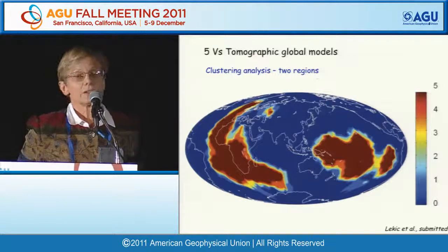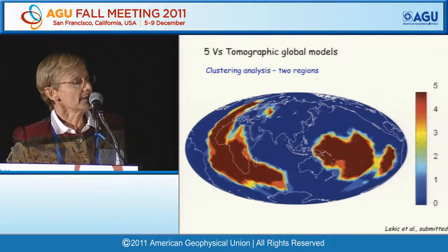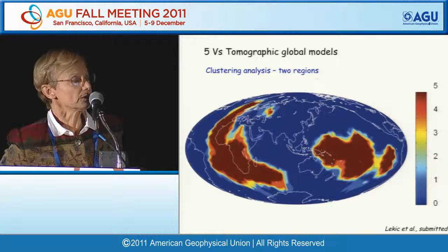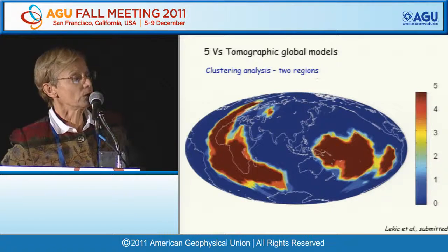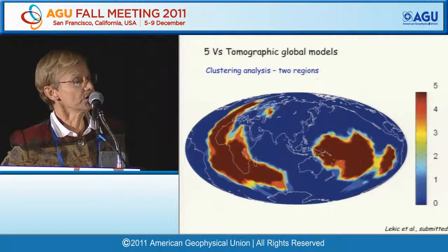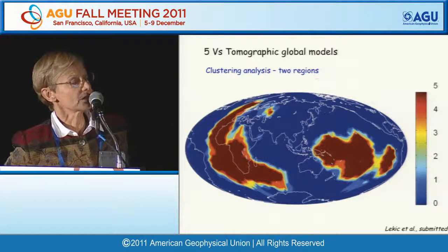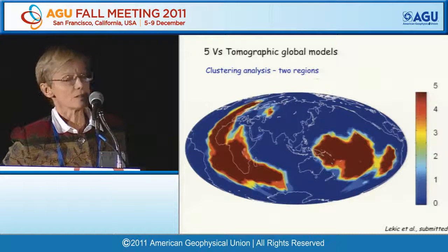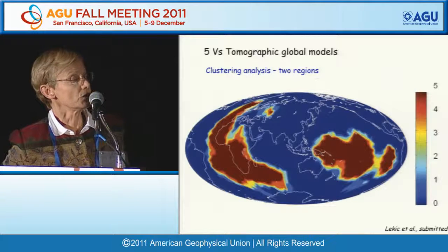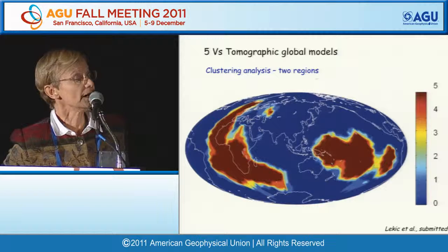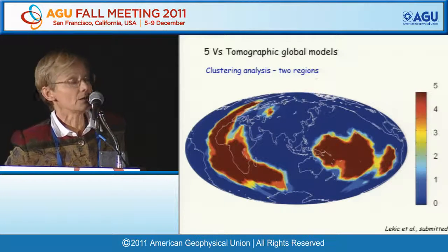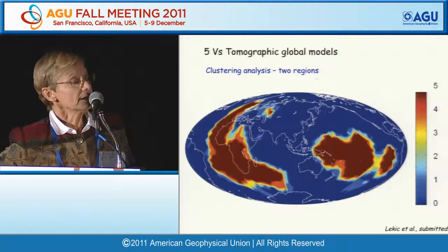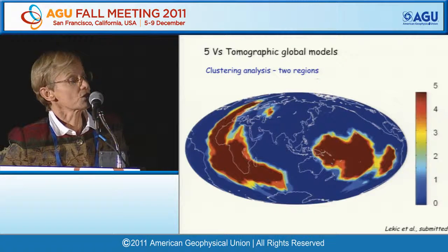There is also agreement among tomographic models on finer-scale structures. Comparing five different tomographic models, we separate the velocity distribution in the lower mantle into two classes—faster and slower than average—and count agreements. Where we get five counts, all models agree velocity is slower than average; a count of zero means all agree it's faster than average. This representation shows the models agree very well, revealing a relatively simple structure in the lowermost mantle: two LLSVPs separated from a region that is contiguously fast.